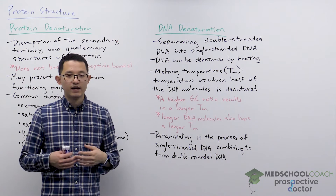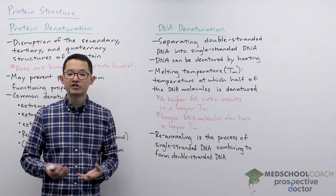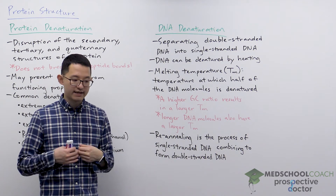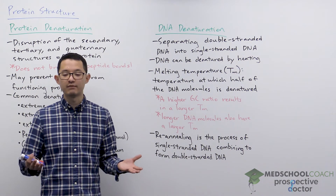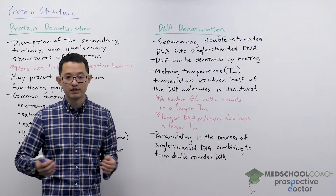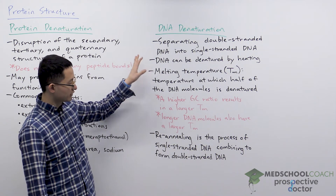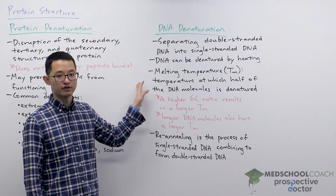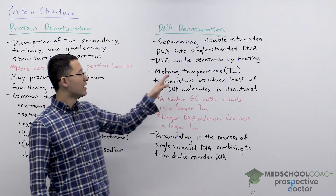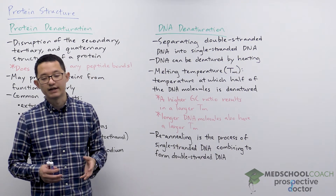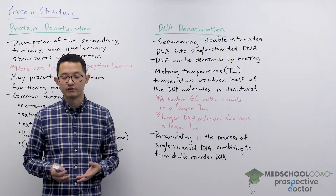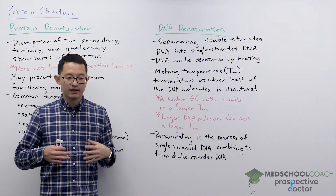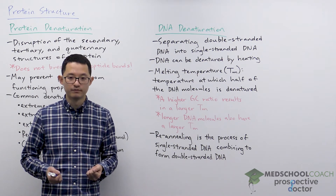This process can be done by heating, which is very important for laboratory techniques such as polymerase chain reaction (PCR), where heating the sample denatures the DNA and creates two single-stranded templates that can be used for replicating DNA molecules. The temperature needed to denature DNA depends on the specific DNA molecule. One measure of this is the melting temperature, denoted TM — defined as the temperature at which half of the DNA molecules in a solution are denatured. The higher the TM, the higher the temperature needed to denature the DNA.